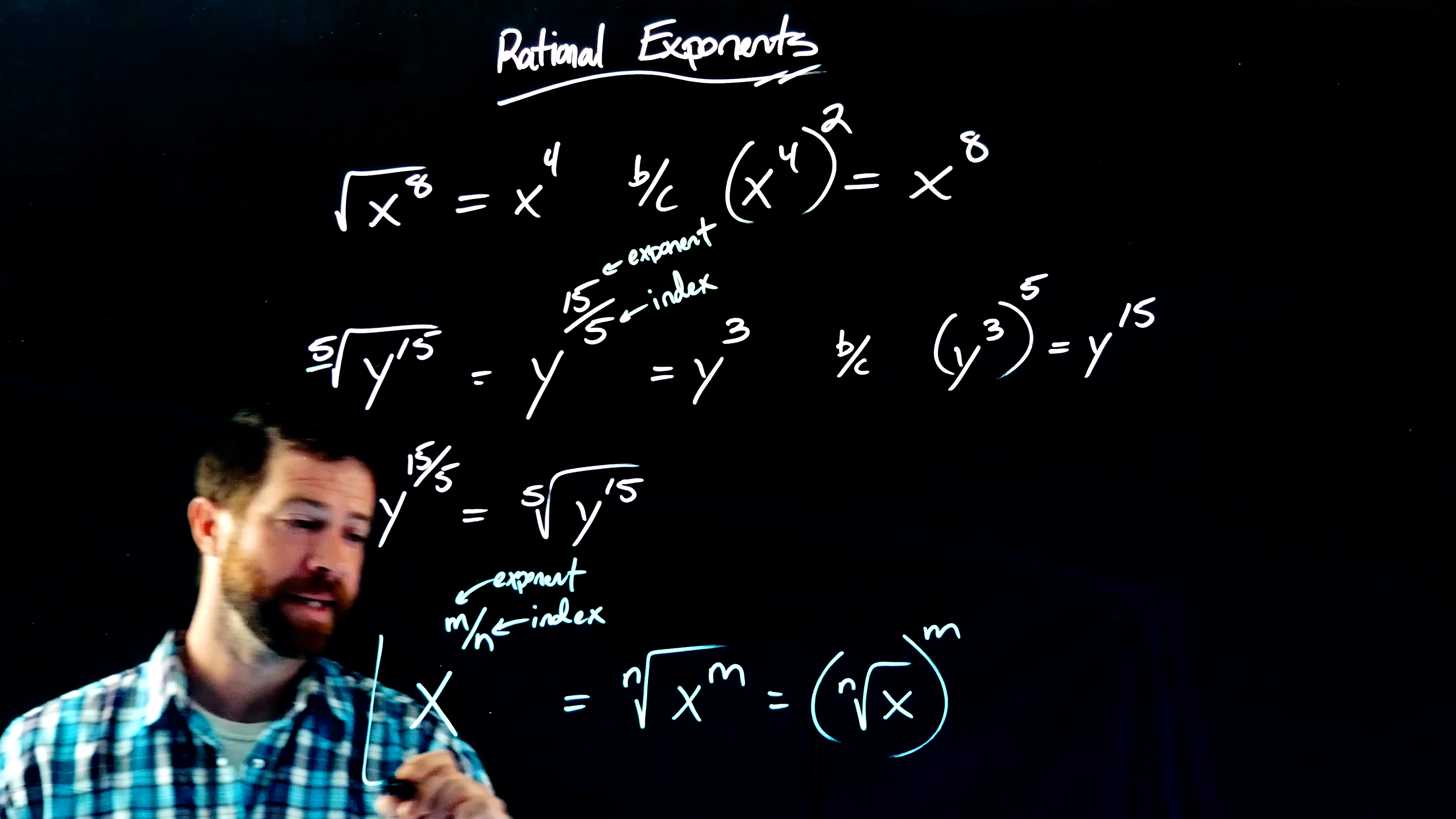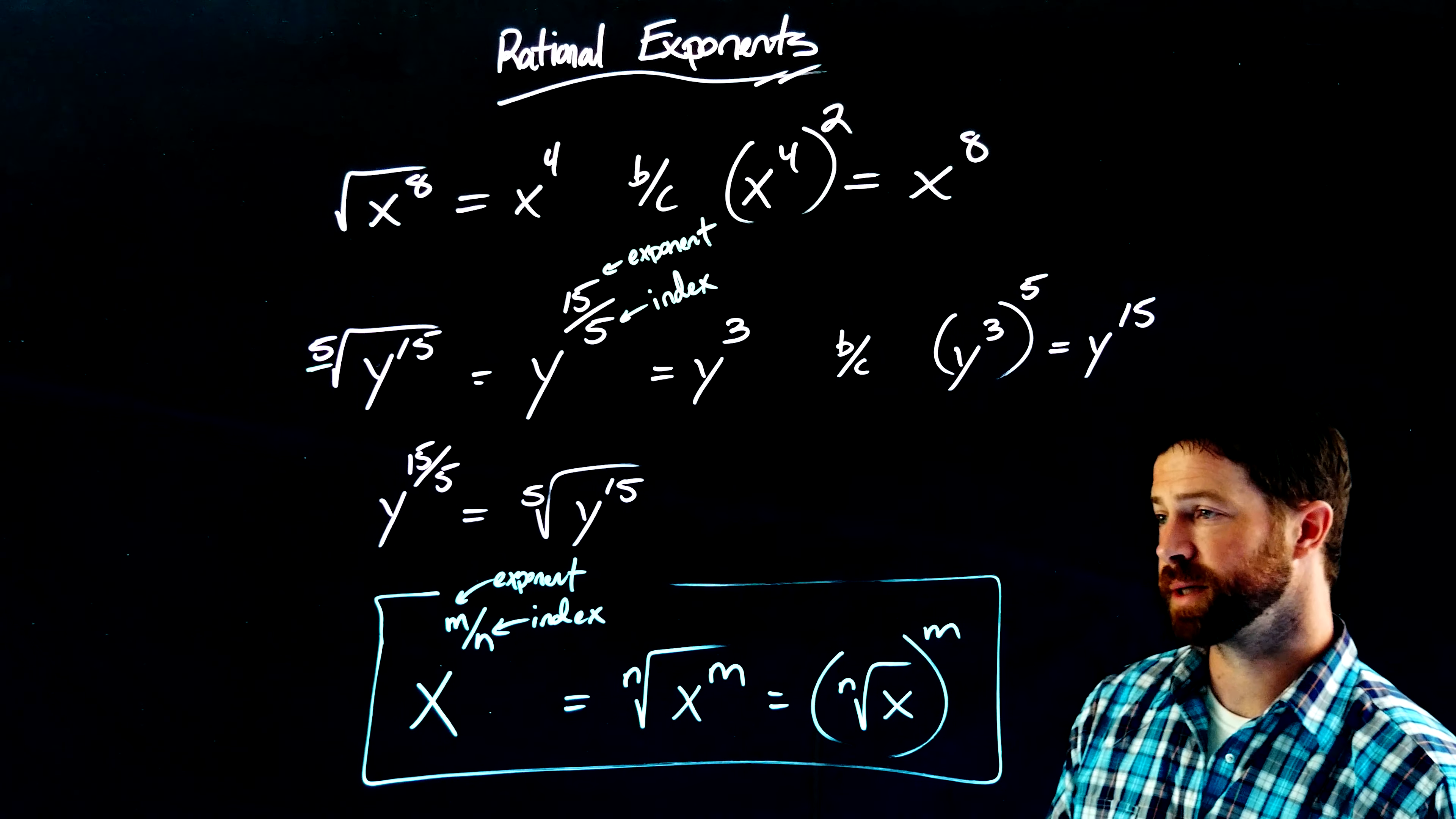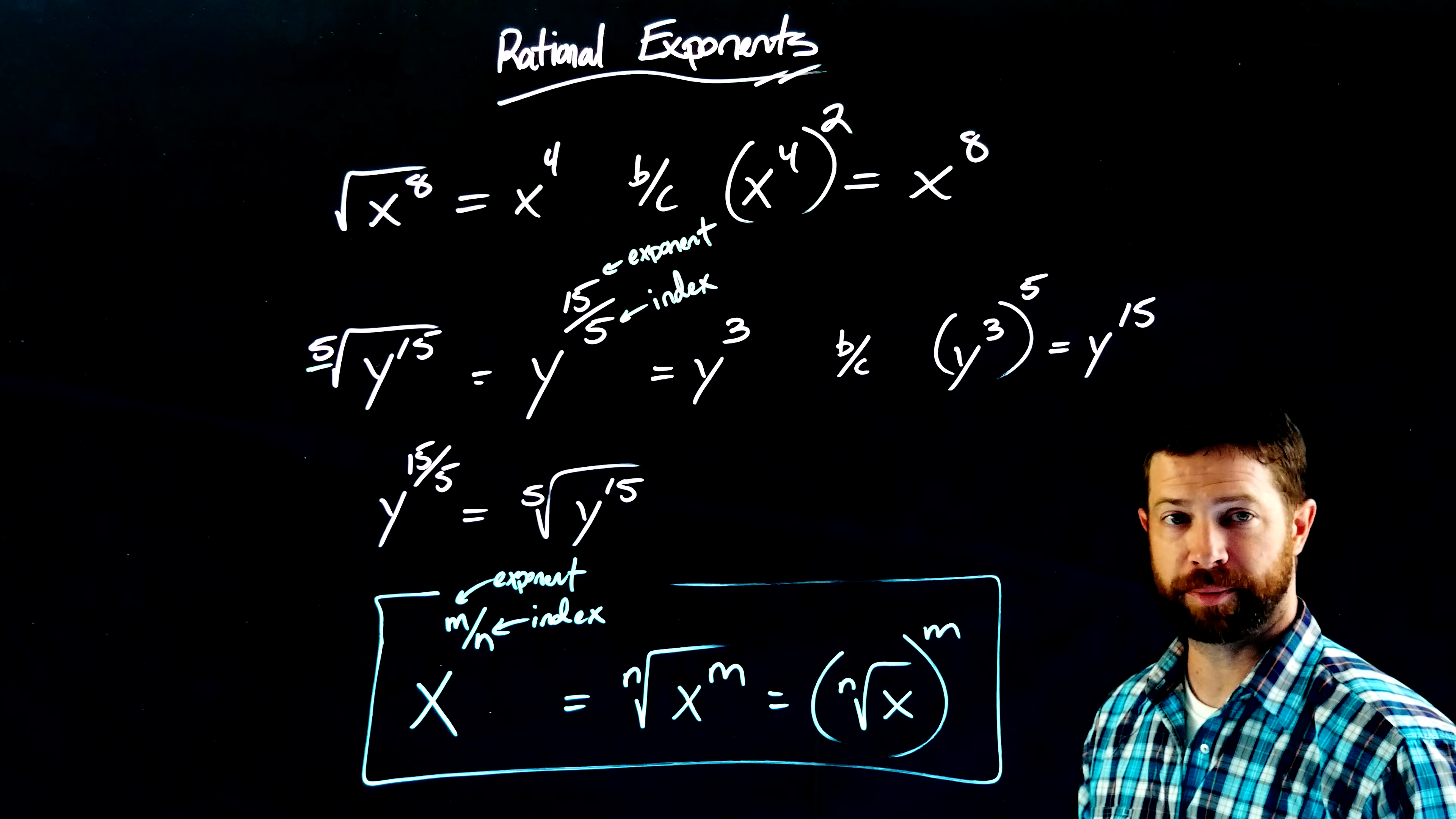So generally speaking, this right here is the general rule for rational exponents or fractional exponents. Any time that we see a fractional exponent, the denominator will be the index of a radical, and the numerator will be the exponent that I leave on the expression.